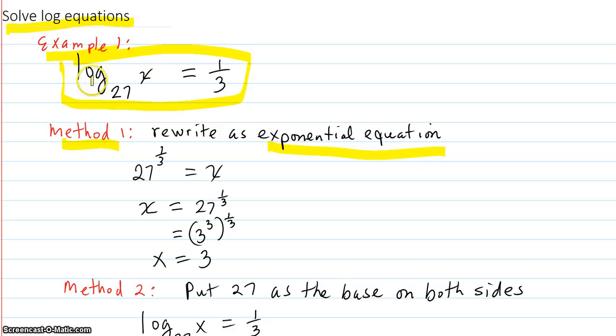So, if the exponent you put on a 27 to get x is 1 third, then 27 to 1 third is x. Because 1 third is the exponent you put on a 27 to get x. Then you just turn it around, x equals 27 to 1 third.